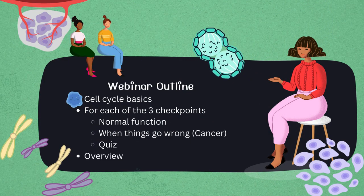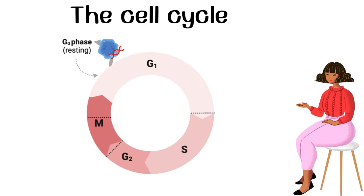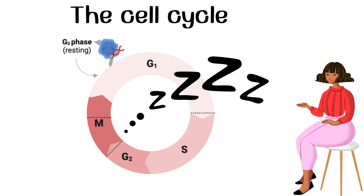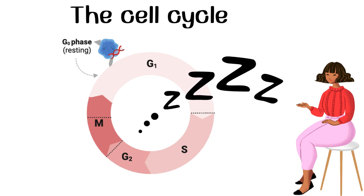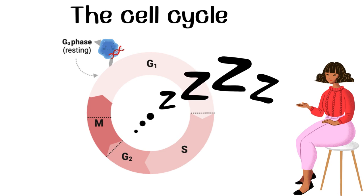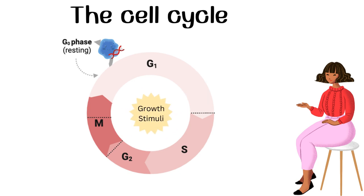Let's hop right into the cell cycle basics. The cell cycle consists of four main stages. At the beginning of the cell cycle, cells are usually held at the G0 or quiescent stage. This is a non-dividing resting state in which cells exit from active cycle and are not preparing to divide or progress, that is until they are activated for division by stimuli which can include growth factors, hormones, or even environmental changes.